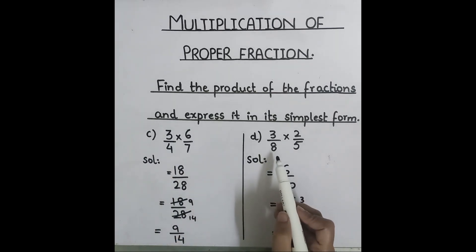Three over eight multiply by two over five. Three times two is six. Eight times five is forty. This fraction is not simplified. Six over forty.